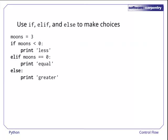Here's an example. Since moons is not less than 0, the program does not execute the first block of code, which would print less. Similarly, moons isn't 0, so the second block isn't executed either. Finally, since no other choice was taken, the statements under the else are executed and the program prints greater.